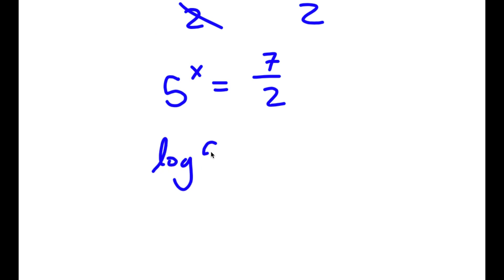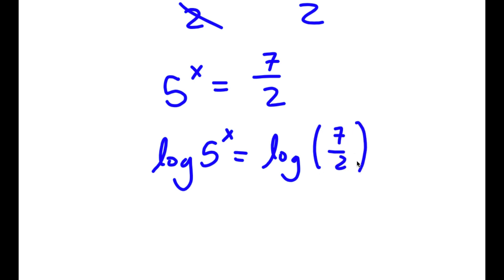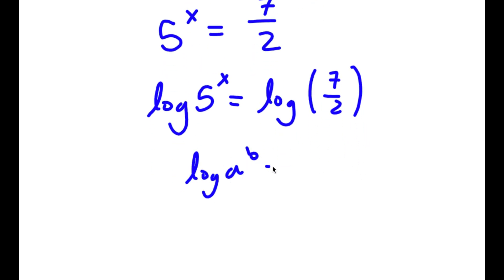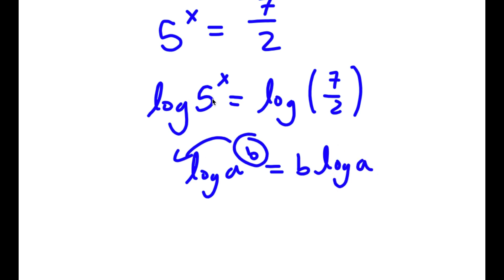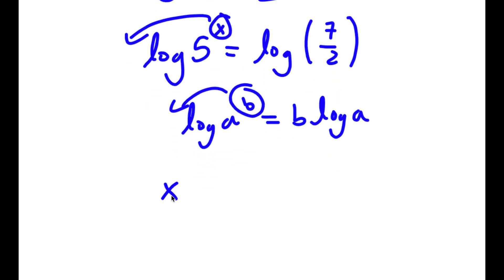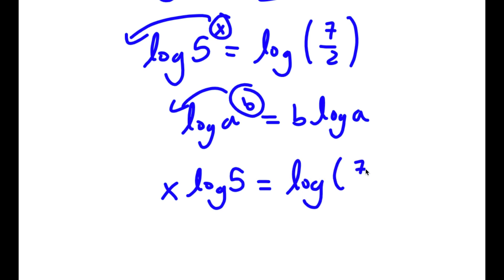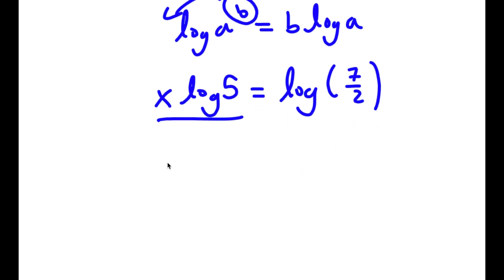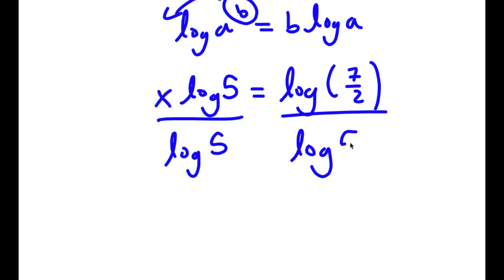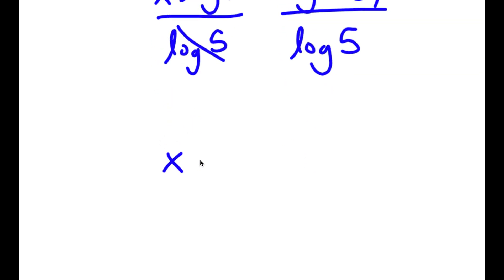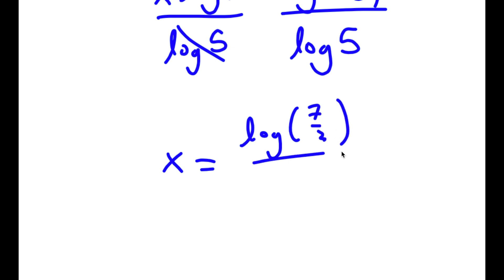Now, if I take the log on both sides, I have log 5 to the power of x is equal to log of 7 over 2. If I have something in the form log a to the power of b, I can move b to the front, so this is equal to b times log a. So in this case, I can move x to the front, giving x times log 5 is equal to log of 7 over 2. Now if I divide both sides by log 5, these two cancel out, and I get x is equal to log of 7 over 2, all over log 5.